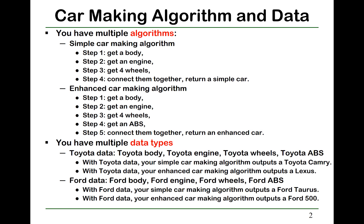For example, suppose you have a simple car-making algorithm in which the first step is to get a body, second step to get an engine, third step to get four wheels, and then the fourth step you connect them together and return a simple car. You also have an enhanced car-making algorithm where you get a body, get an engine, get four wheels, add ABS, then connect them together and return an enhanced car.